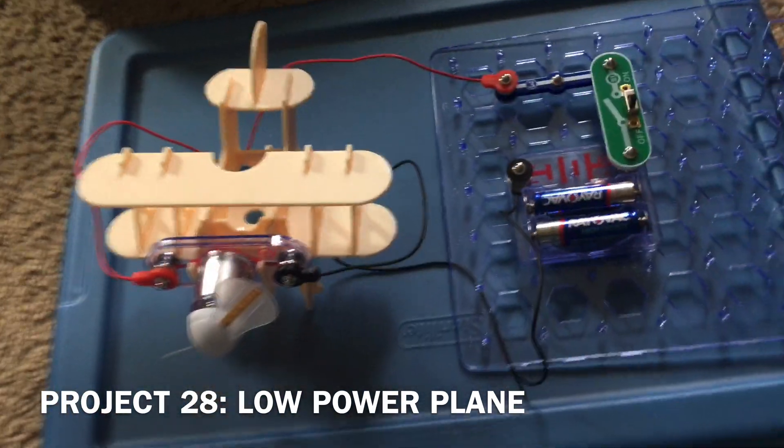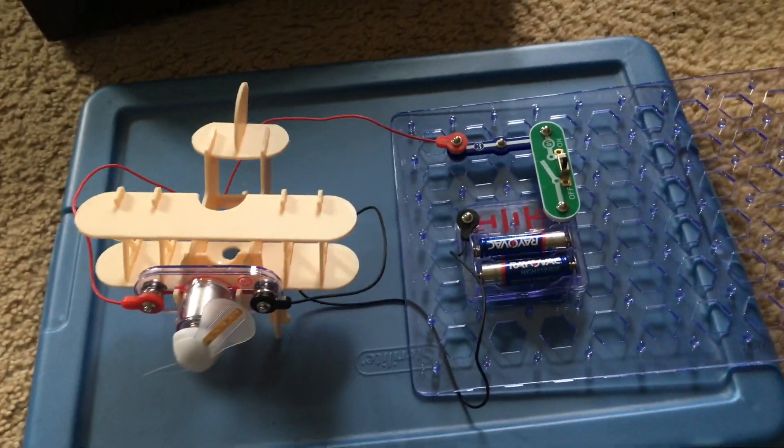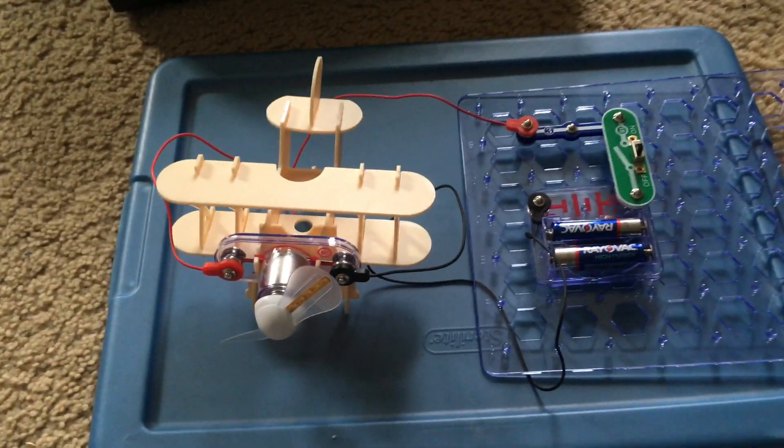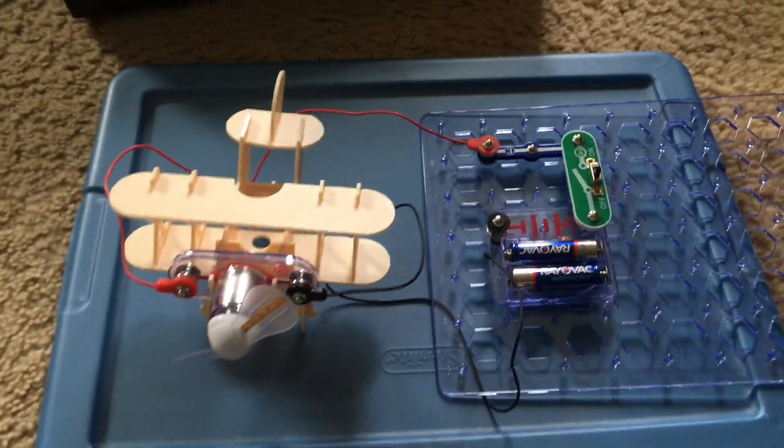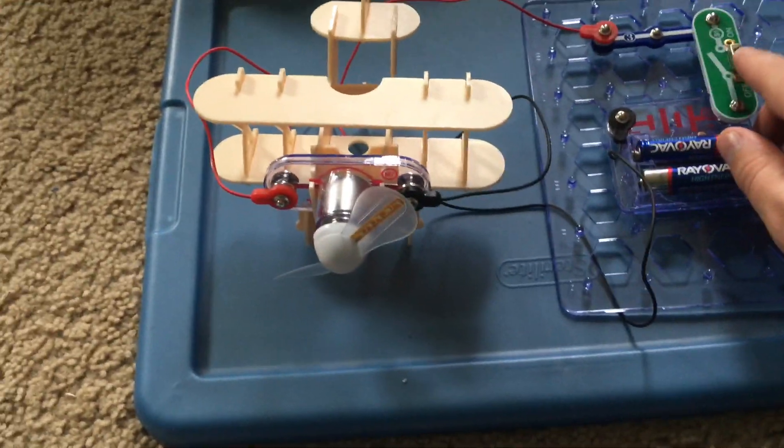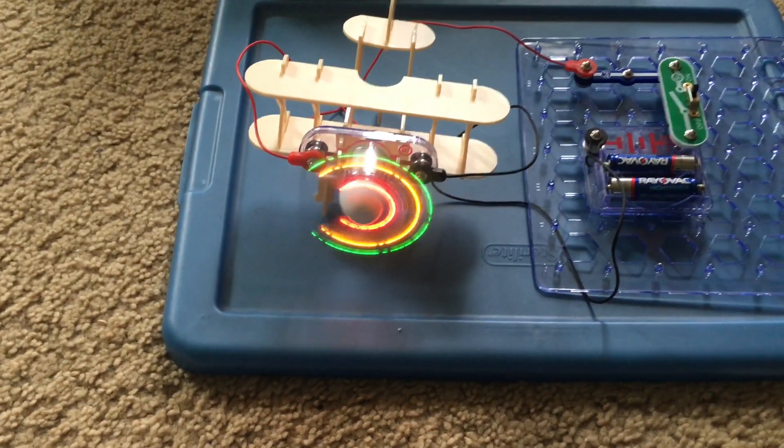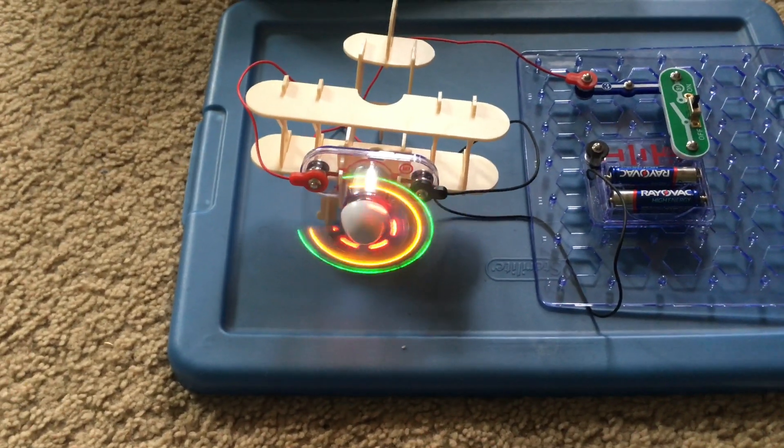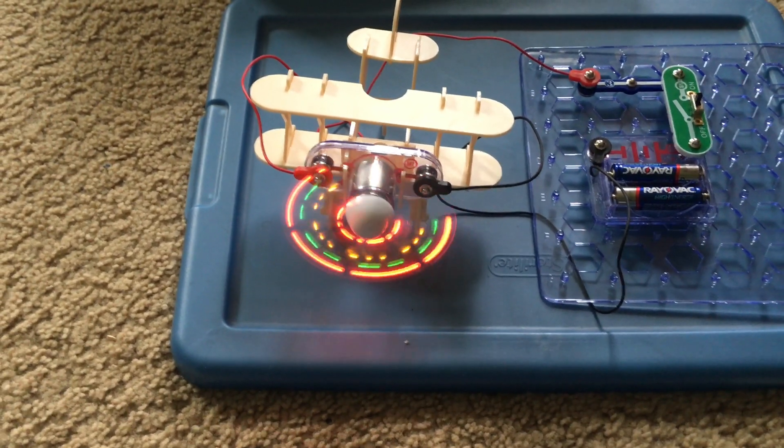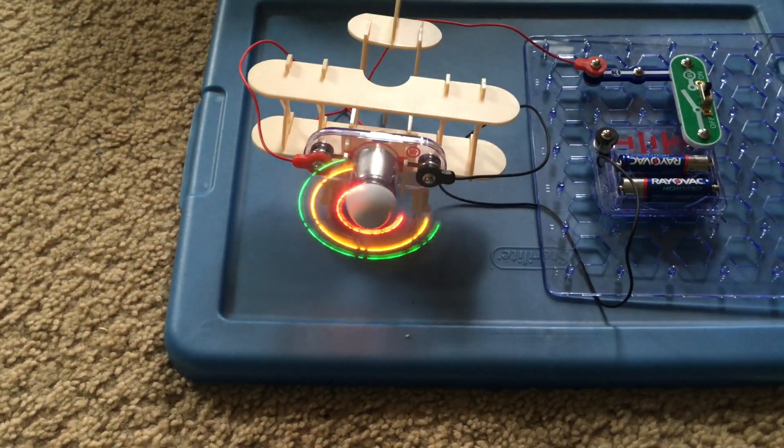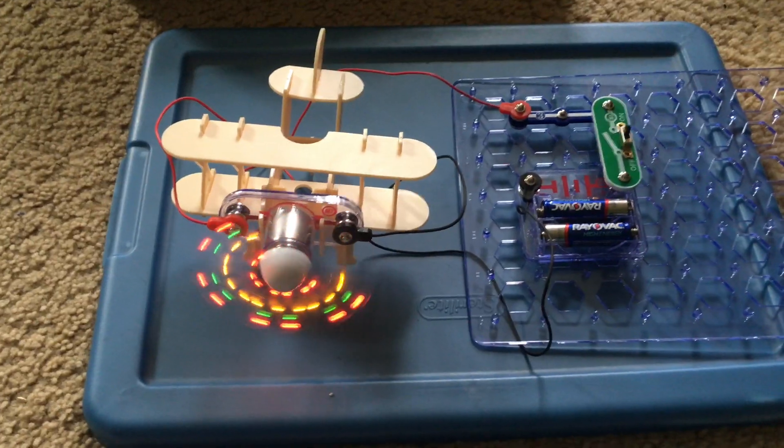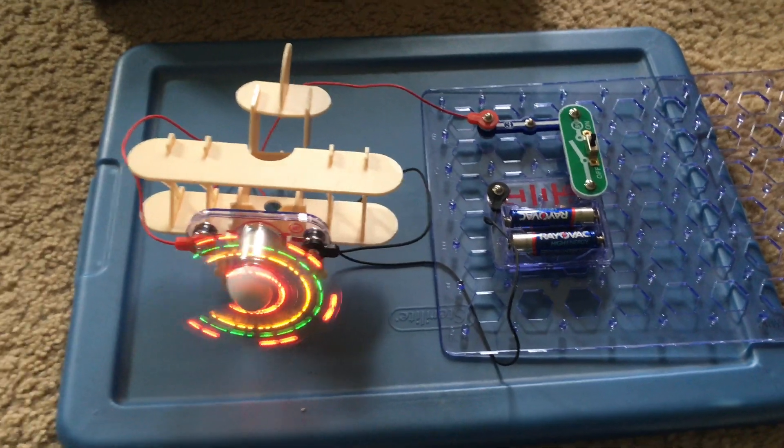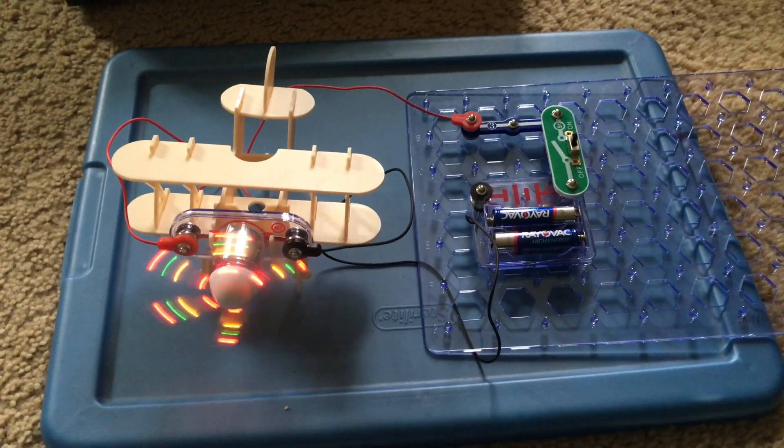I removed one of the battery holders in the circuit attached to the airplane and now when I turn on the slide switch the motor spins and lights up. But you can see that the LEDs are much dimmer and there is not enough power for the blue LED to come on either. There's only half the amount of energy as there was in the previous project.